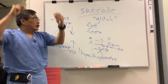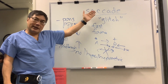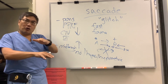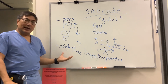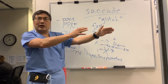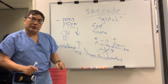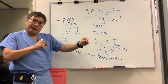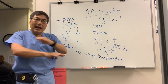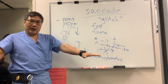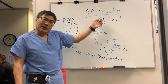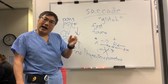Saccades have a cortex component that initiates them, a pontine component for horizontal saccades, and a midbrain component for vertical saccades, then down the final pathway from the nucleus, the interneuron, and to the infranuclear pathway. Any problem along any part of that pathway can disrupt the saccadic movement.